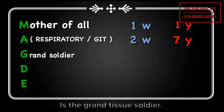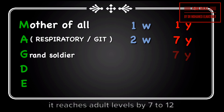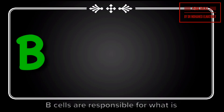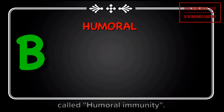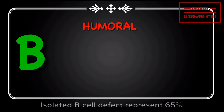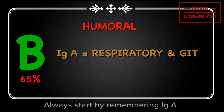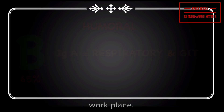IgG is the grand tissue soldier and reaches adult levels by seven to twelve years. B cells are responsible for what is called humoral immunity. Isolated B cell defect represents 65% of primary immunodeficiency diseases. Always start by remembering IgA's workplace.